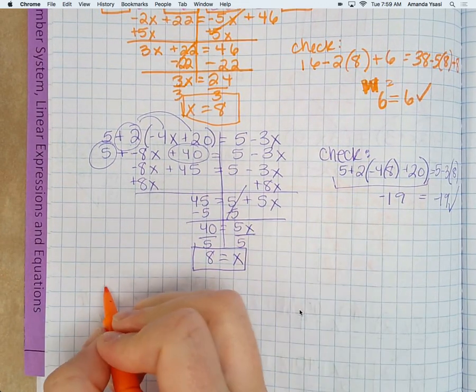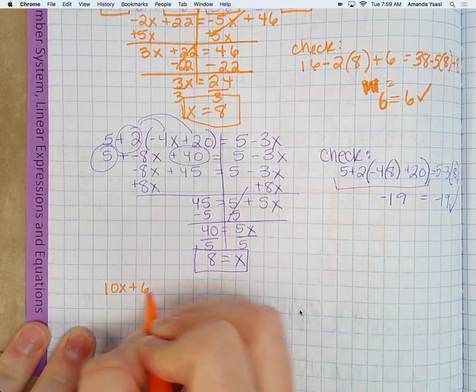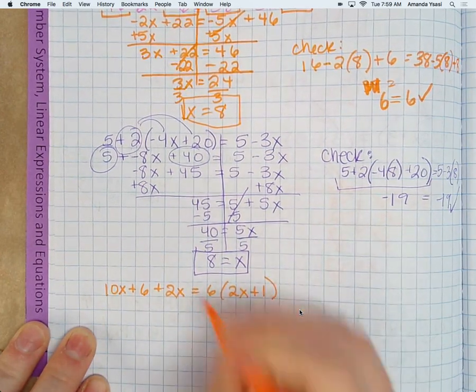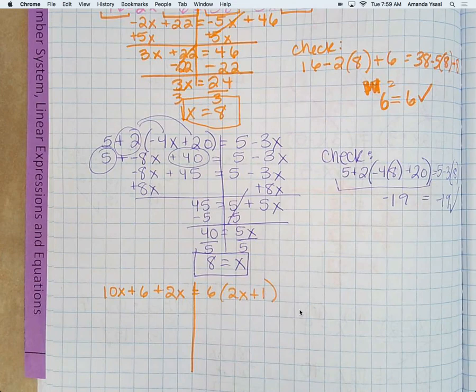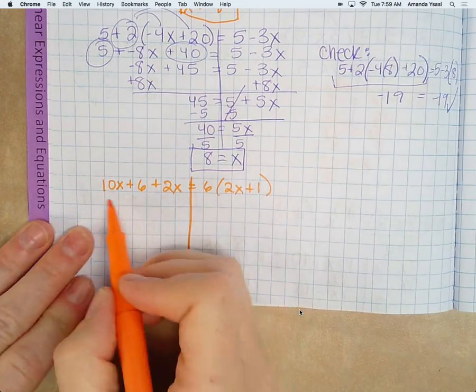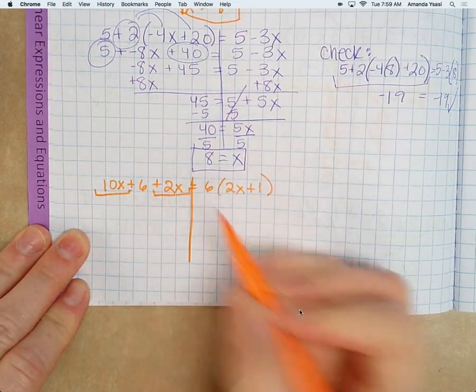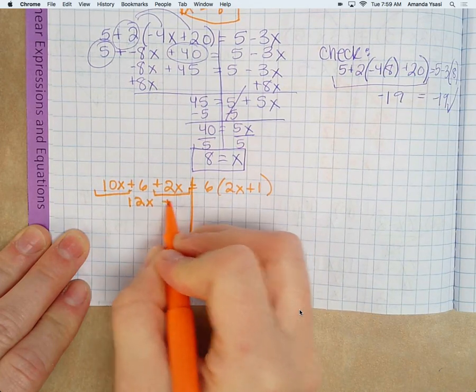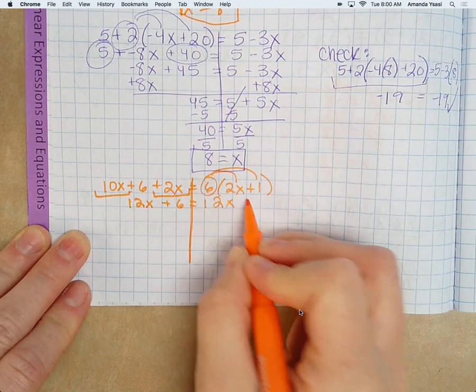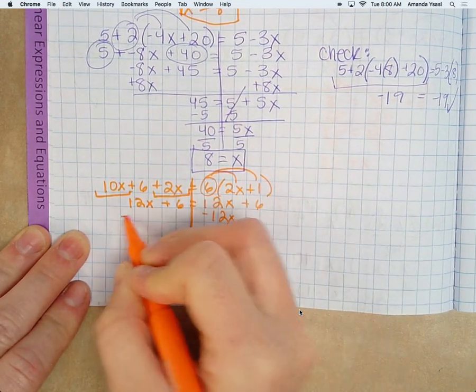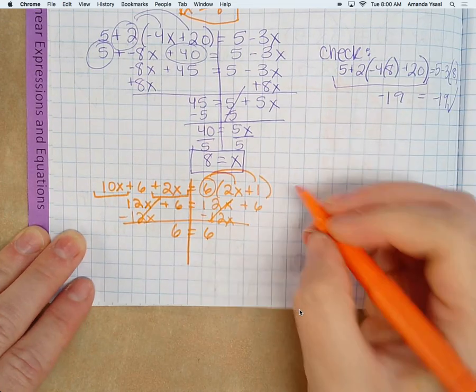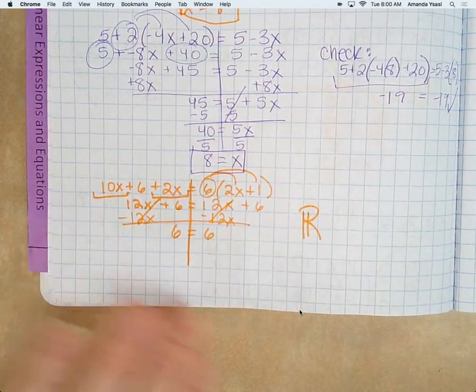All right, the last problem on this page is 10x plus 6 plus 2x equals 6 parentheses 2x plus 1. So on the left side, we just need to combine the 10x and the 2x, making that 12x plus 6 equals, distribute the 6, 12x plus 6. Subtract 12x on both sides. 6 equals 6. And that is true. So that means all real numbers, infinite solutions.